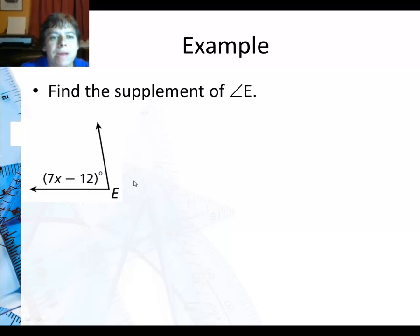Well I know if they're supplements they must add to 180. So I'm going to set up an equation: the measure of the supplement plus this angle E, 7x minus 12, is 180. Then I use, and that's based on the angle addition postulate, one plus the other is 180.